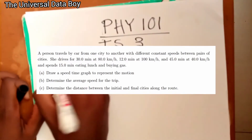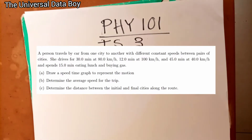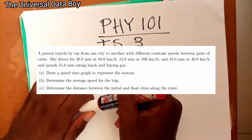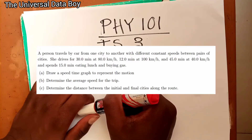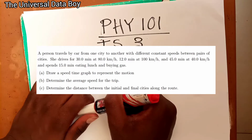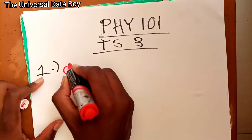Question one: A person travels by car from one city to another with different constant speeds between pairs of cities. She drives for 30 minutes at 80 kilometers per hour, 12 minutes at 100 kilometers per hour, and 45 minutes at 40 kilometers per hour. The tasks are: (a) draw a speed-time graph, (b) determine the average speed for the trip, and (c) determine the distance between the initial and final cities along the route.